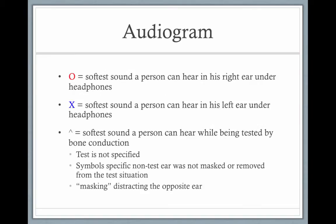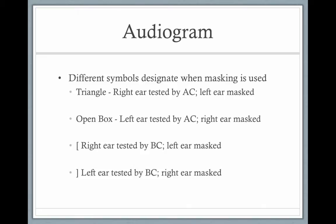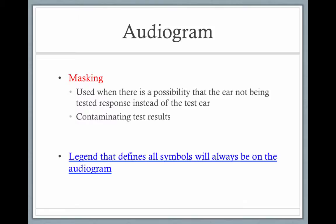The O's in red represent the right ear air conduction. If sounds are masked, the right ear is a triangle and the left ear is an open box. Brackets are for bone conduction masked; carets are when they're unmasked. Masking is used when you want to isolate one ear — similar to how the eye doctor tests one eye at a time. The audiologist puts noise in one ear to gain a response from the other ear alone, to separate them.